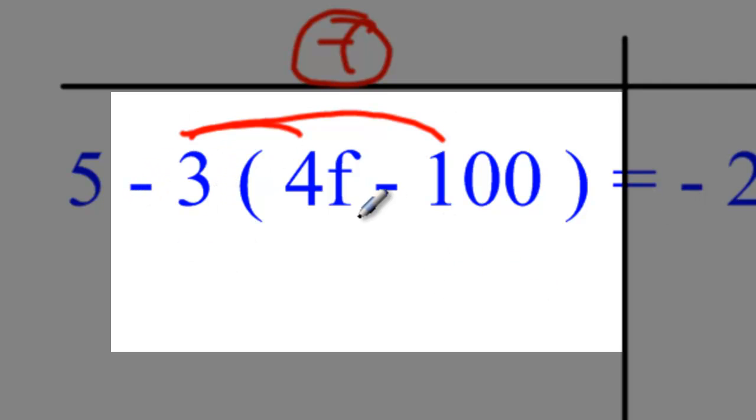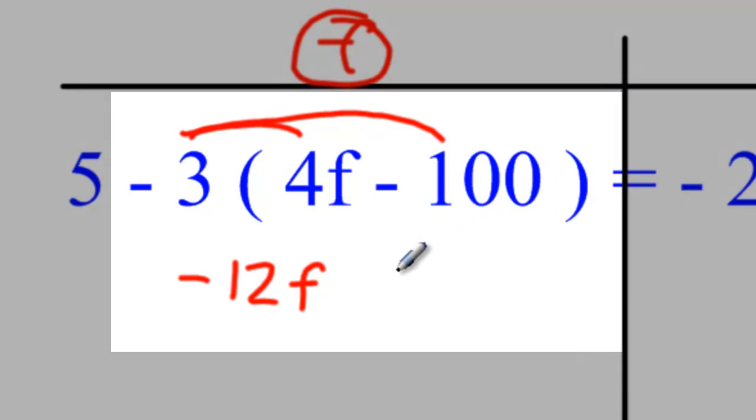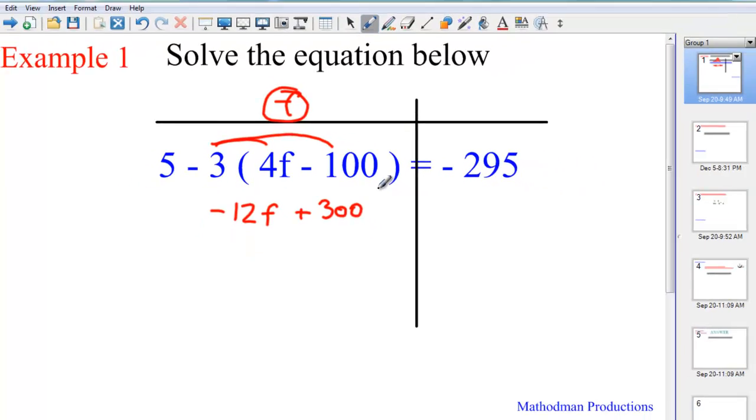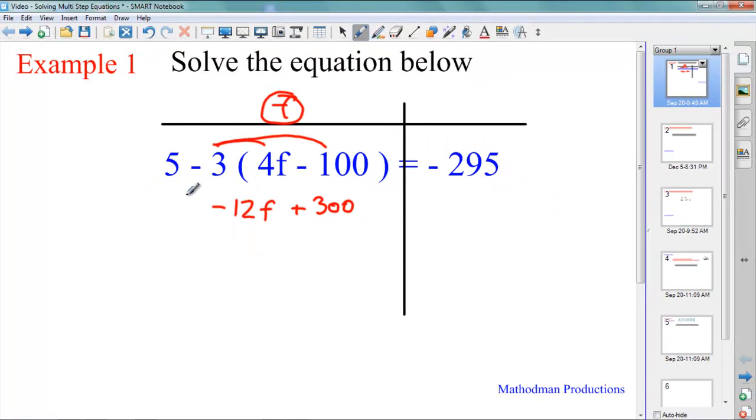Negative 3 times 4F. That's a negative 12F. Negative 3 times a negative 100. Look at that negative. That's with that 100. That's a positive 300. Anything you didn't touch just drops down. 5 drops down. So does this negative 295.